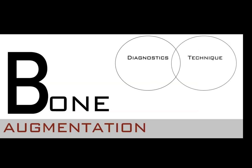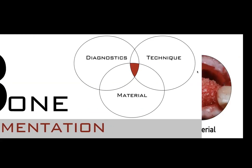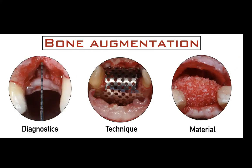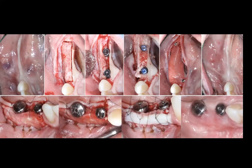Going back to our topic: bone augmentation is an interplay of three things — technique, diagnostics, and materials. But today our discussion really falls somewhere in between all three, because we're talking about sequencing: how we take the right diagnostics, choose the right technique and material, and put all the steps in order. Do we place the implant at the same time? Do we do soft tissue grafting first?